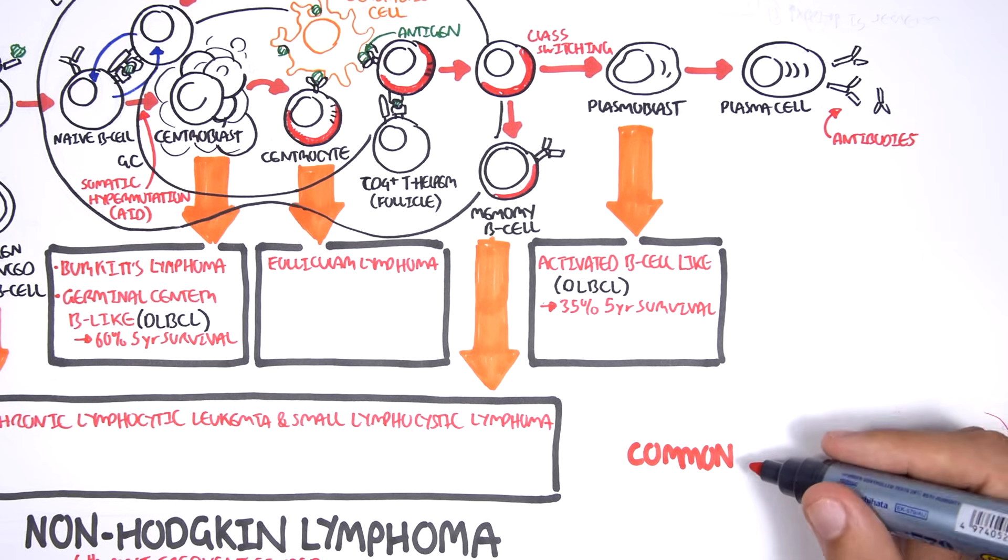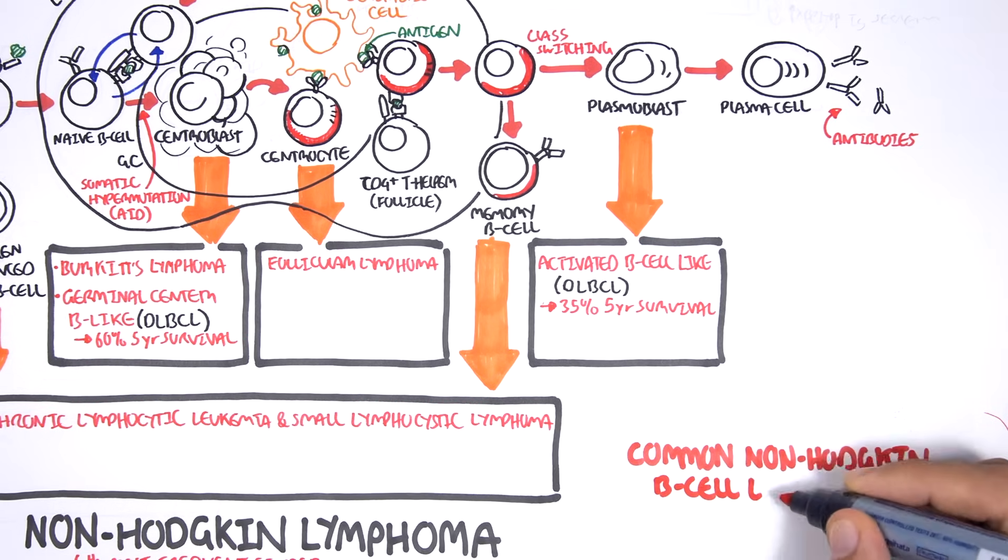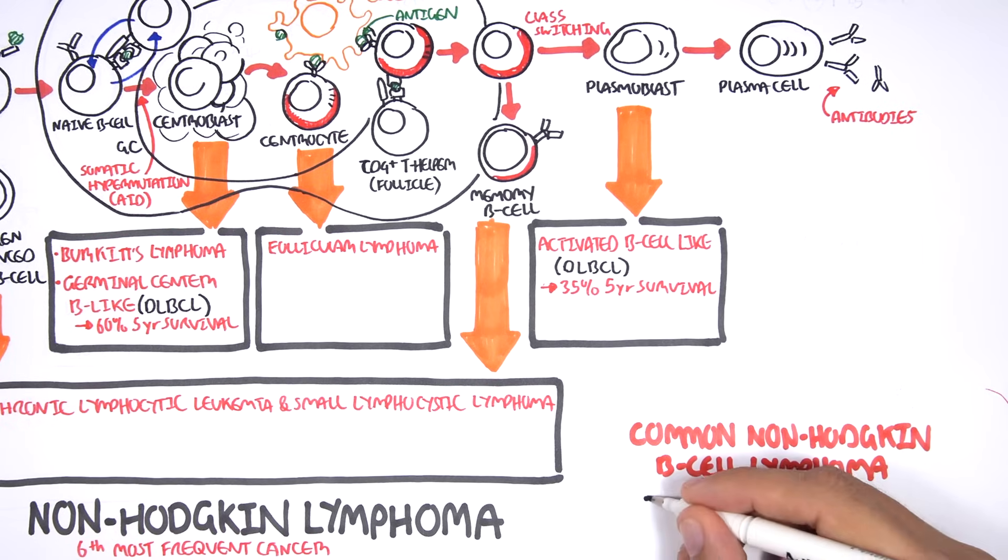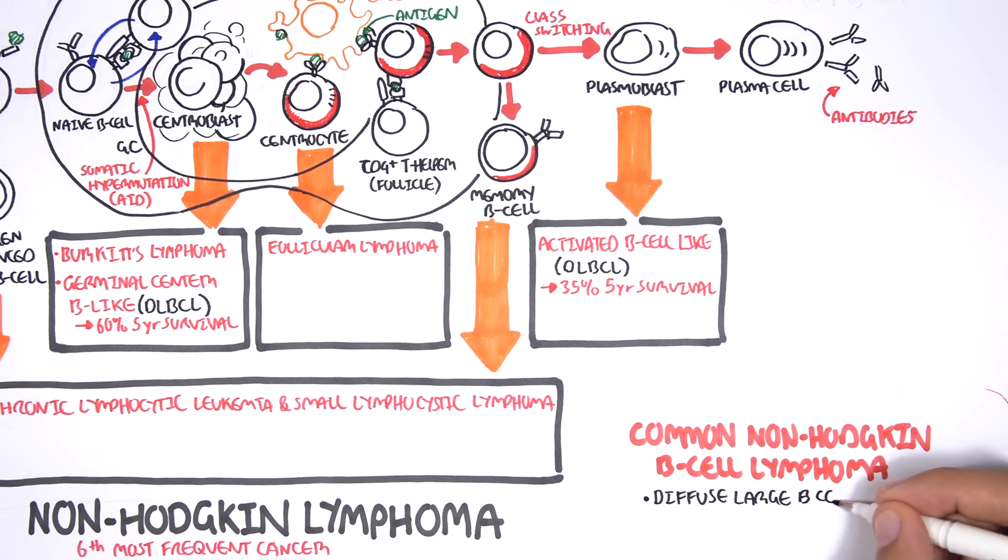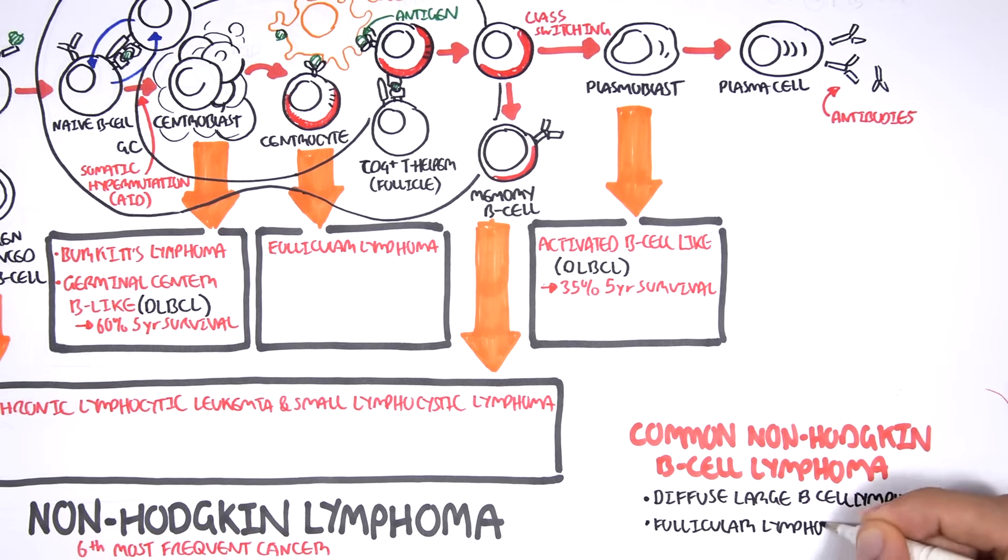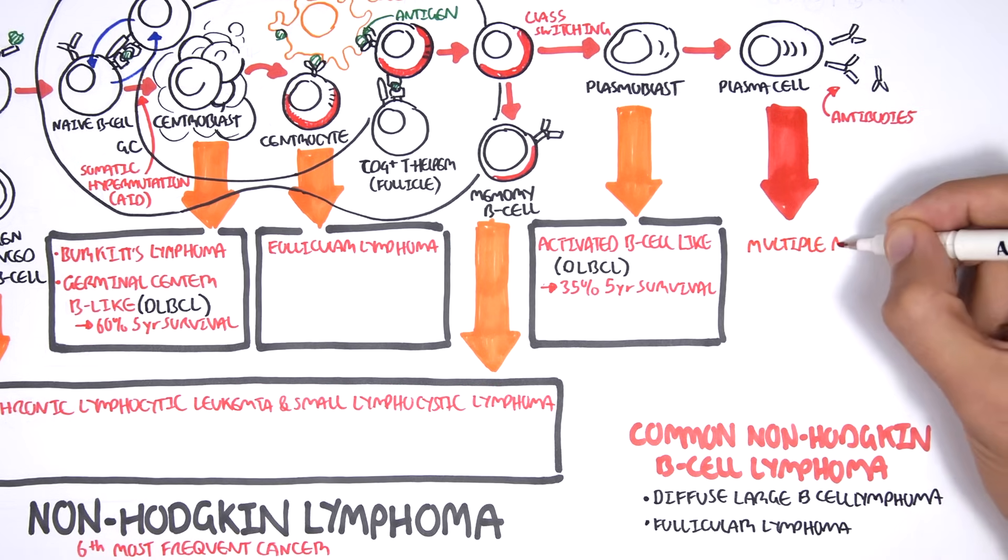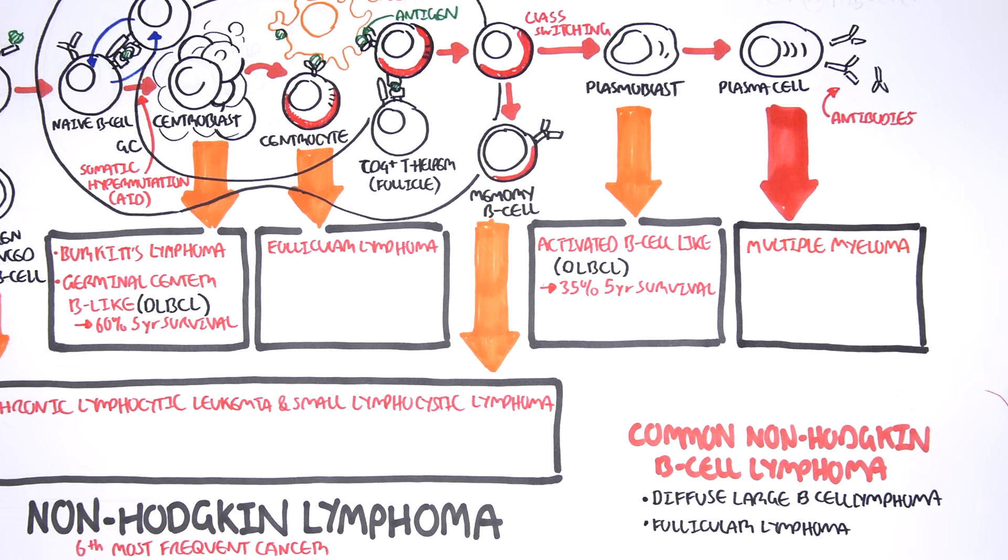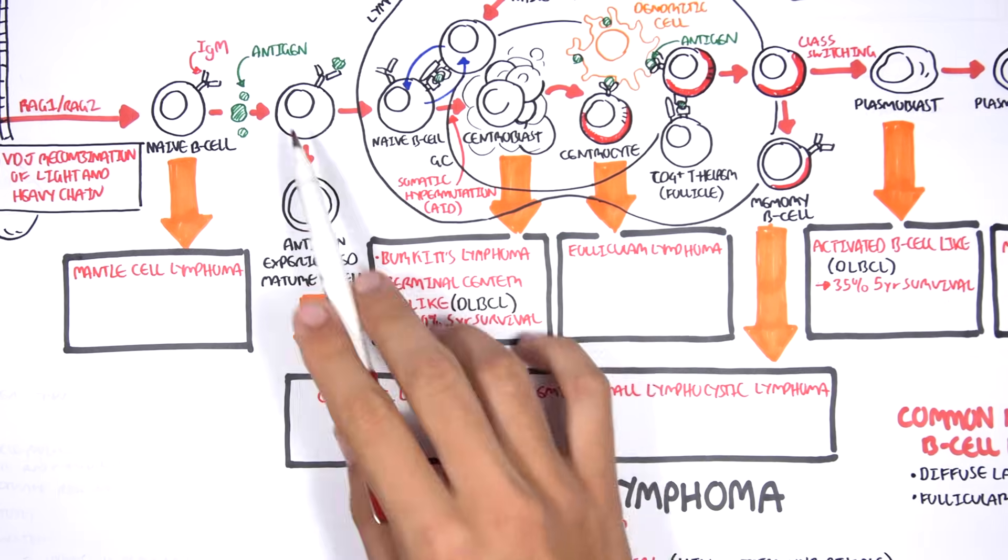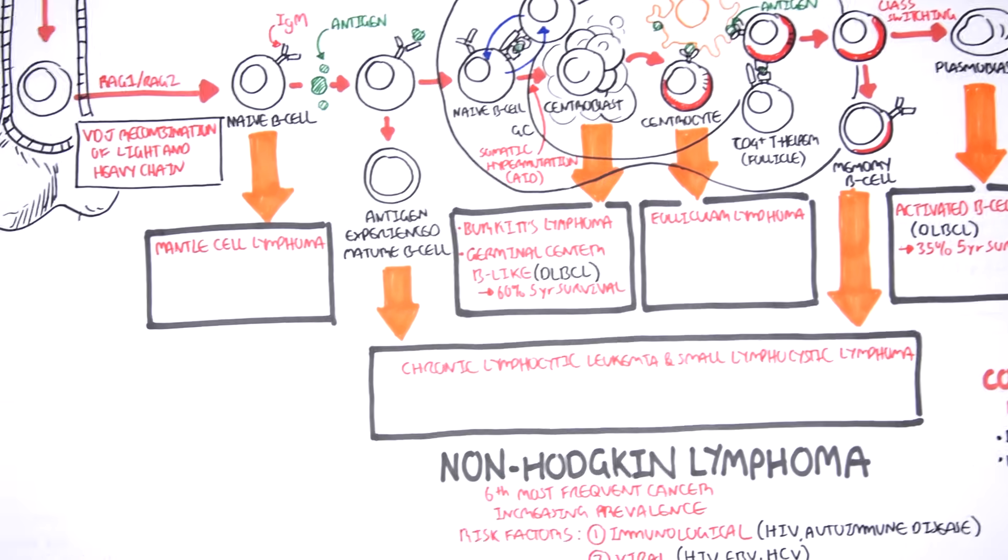The reason it is important to know this is because the most common non-Hodgkin's B-cell lymphomas are the diffuse large B-cell lymphomas, as well as the follicular lymphomas. Using this diagram, it is also important to introduce a common type of cancer which arises from plasma cells. Plasma cells can give rise to multiple myeloma, in which there is so much plasma cells being produced and moving into the bone marrow that it causes big problems.